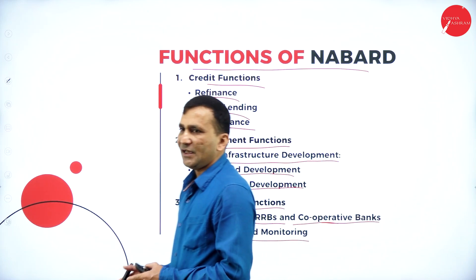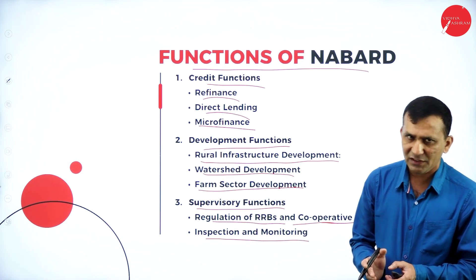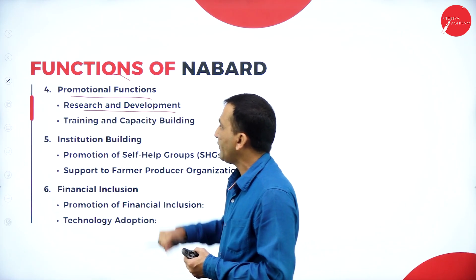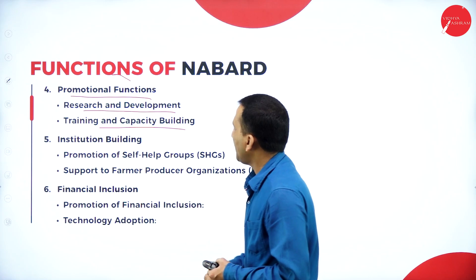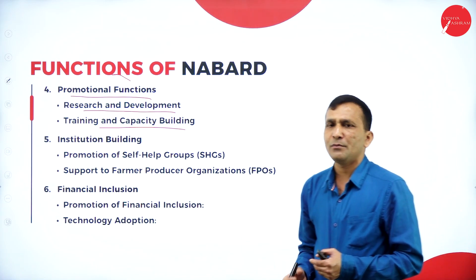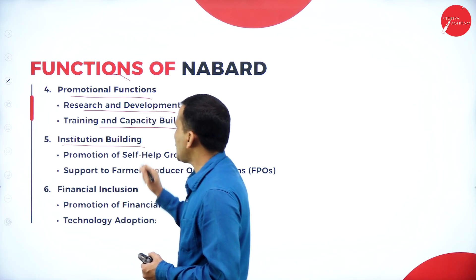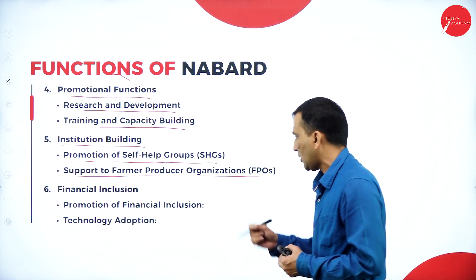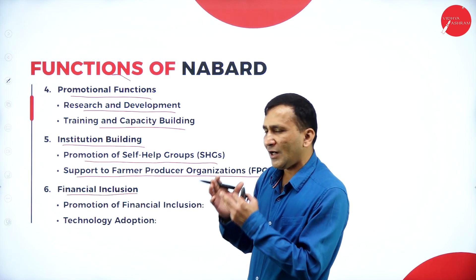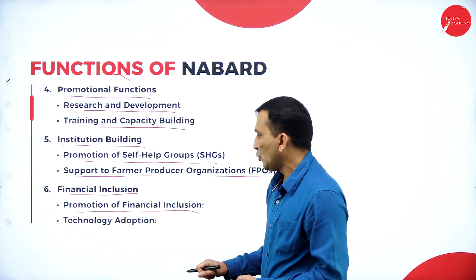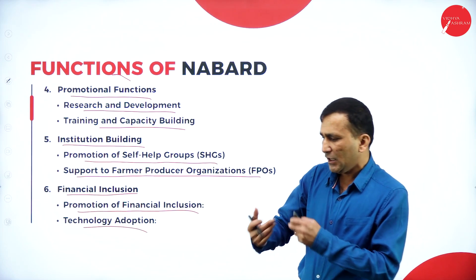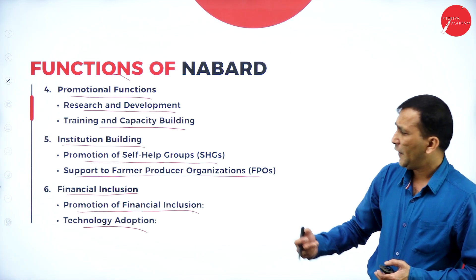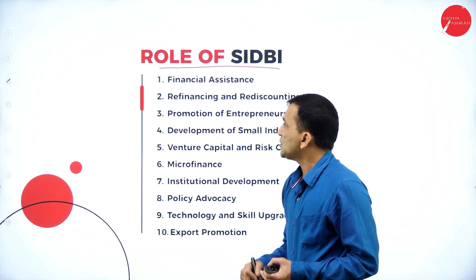Under NABARD's promotional functions: research and development is very important, along with training and capacity building provided for farmers. Institution building includes promotion of self-help groups and support to Farmer Producer Organizations. Financial inclusion promotion and technology adoption are also key, as farmers need to incorporate the latest rapidly increasing technology into the field of farming.